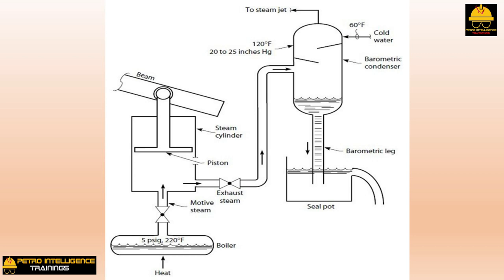It is easy to see how the barometric condenser could condense the exhaust steam more efficiently than periodically squirting water into the steam cylinder. The barometric condensers could absorb the latent heat of condensation of the steam at temperatures of 120°F or less. Water condenses at a pressure of 25 inches of mercury at this temperature. This extremely low vacuum sucked the piston down more forcefully due to the greater differential pressure across the cylinder — atmospheric pressure on top and condenser pressure below.